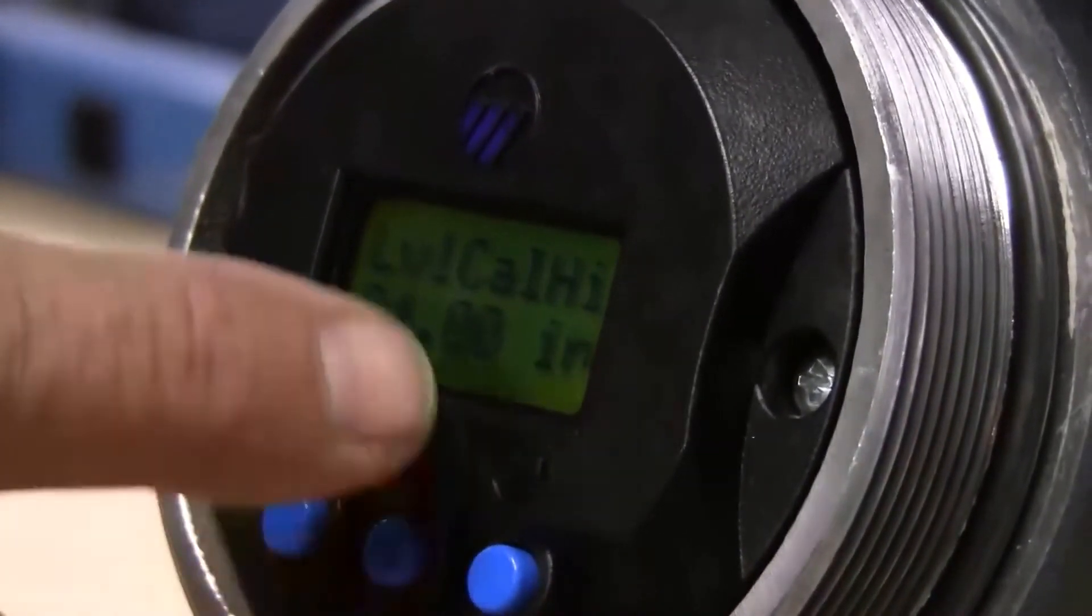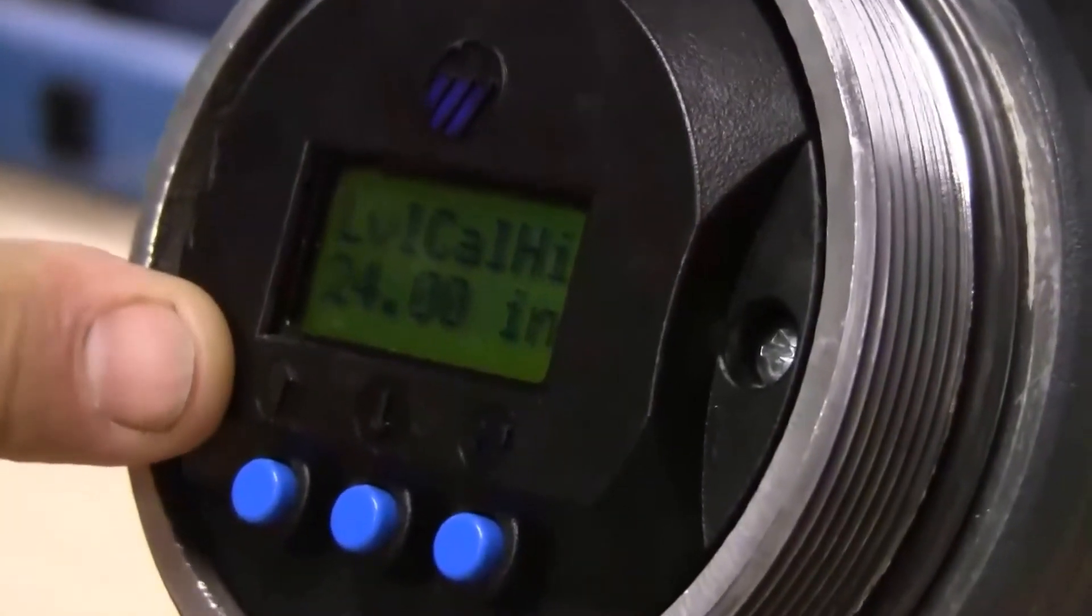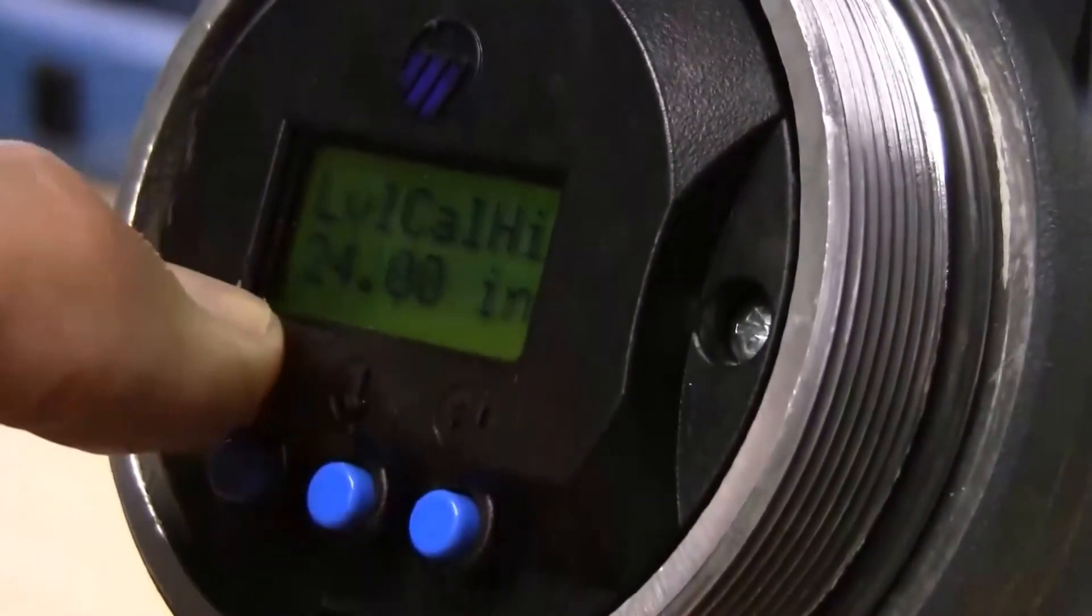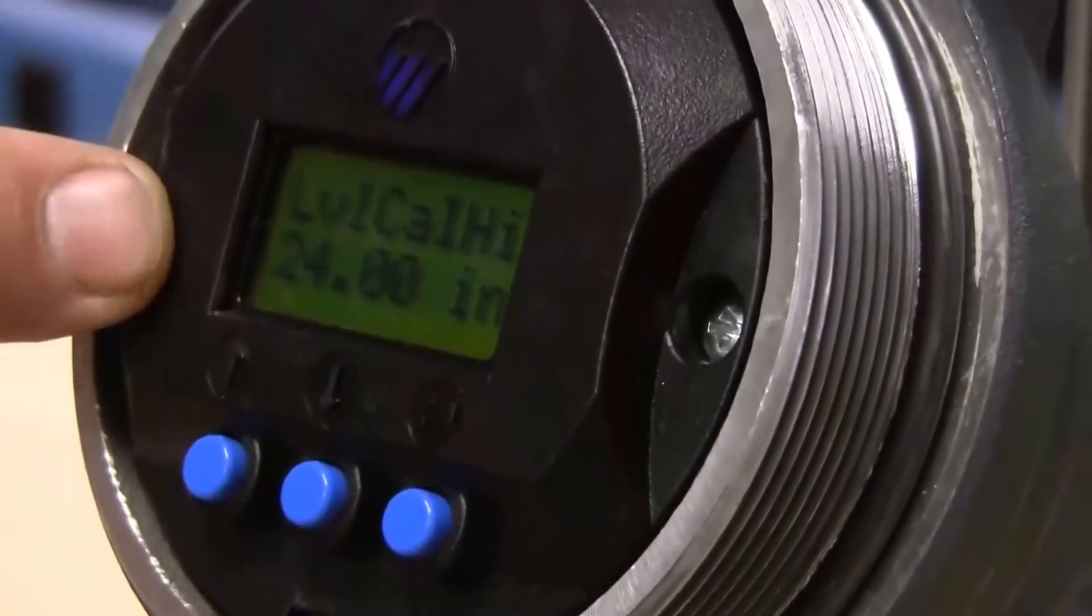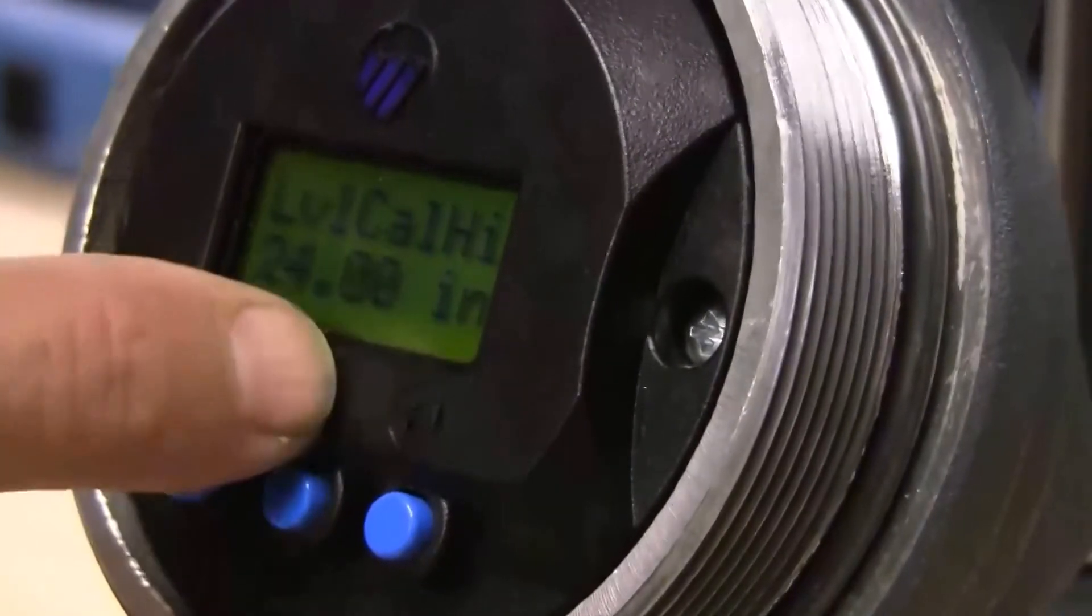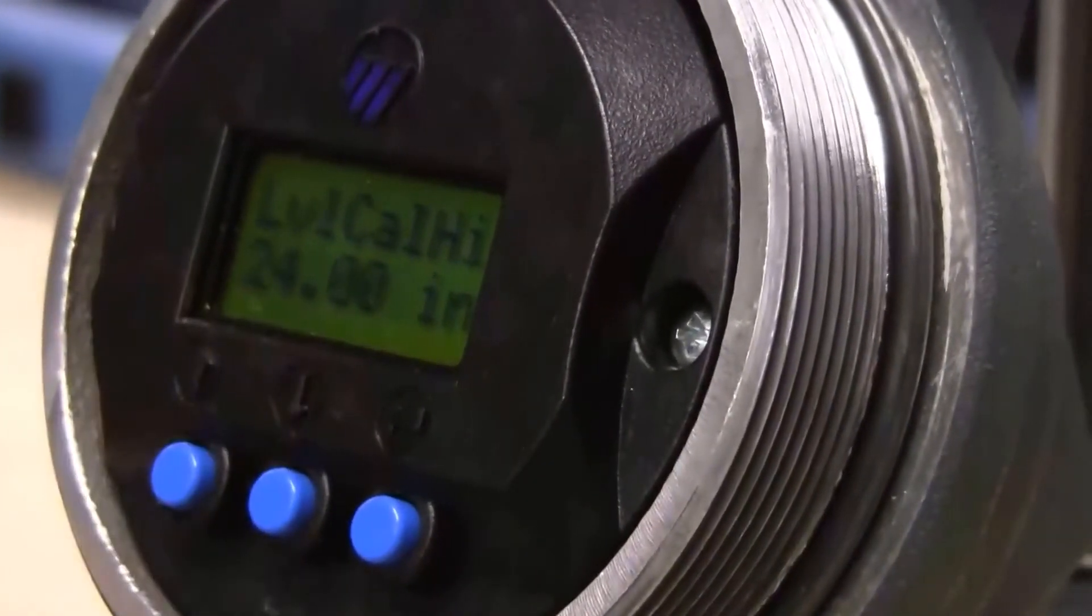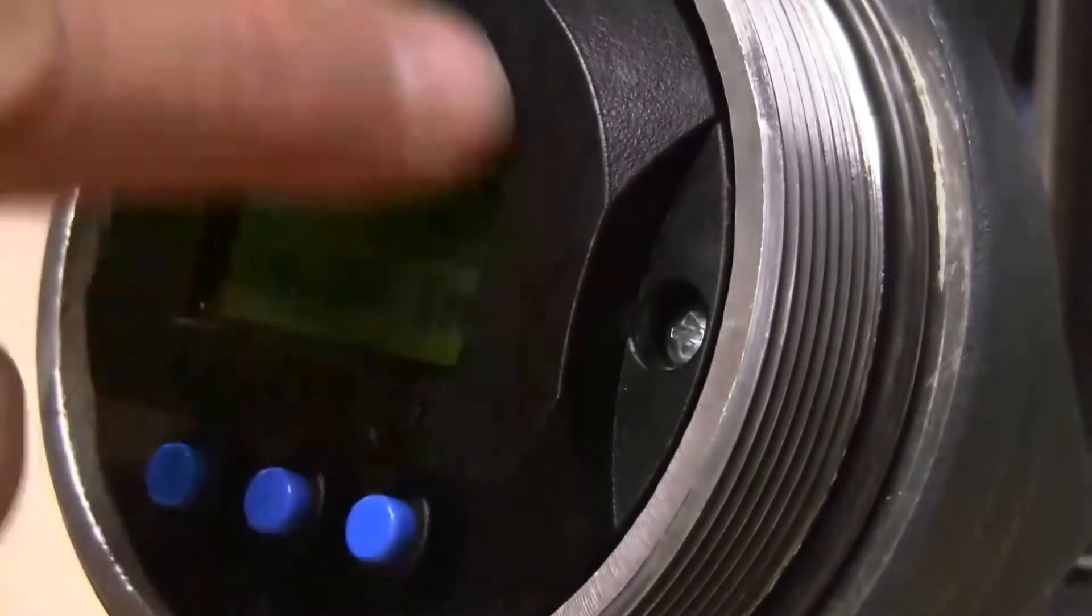Now the level cal high, if this was a 48 inch displacer, the 24 inches is appropriate for a 50 percent level. If I had 75 percent level on a 48 inch displacer, that would be a 36 inch level. If I had 100 percent on the 48 inch displacer, that would be a 48 inch reading that I would want to see. So we're going to keep this at 24 inches.